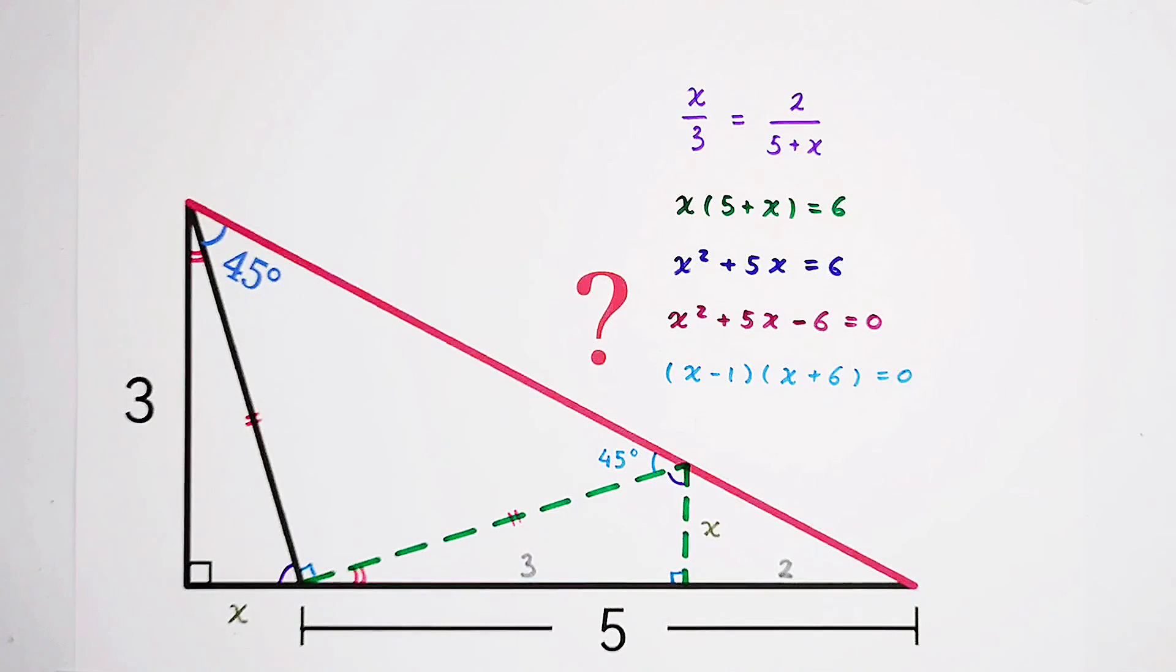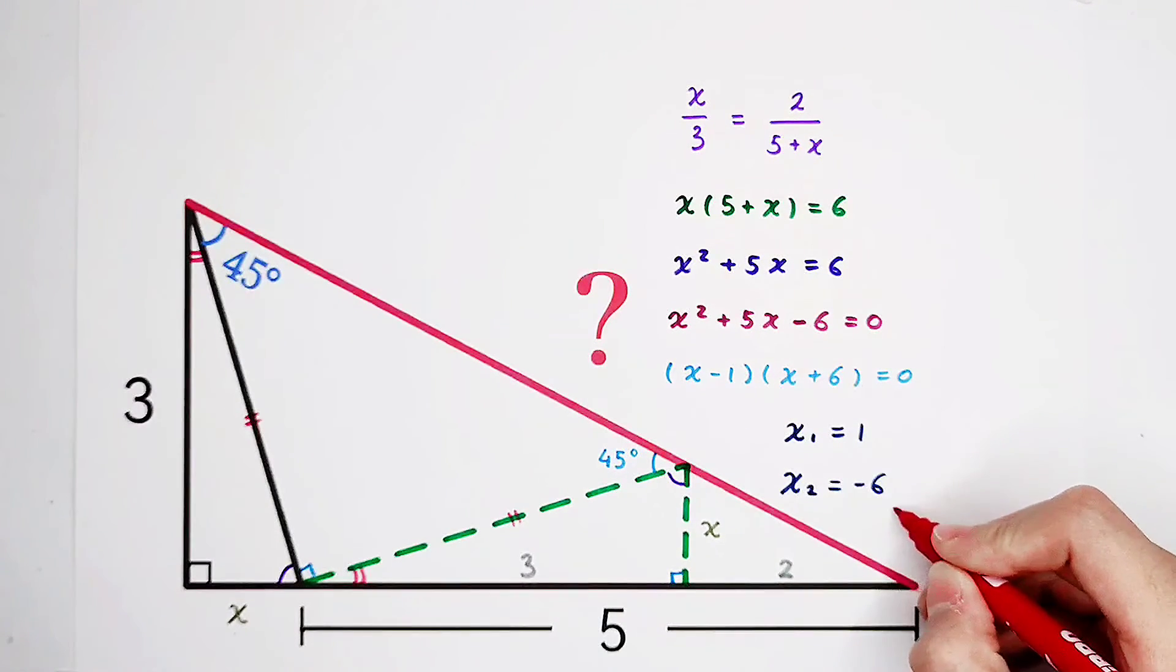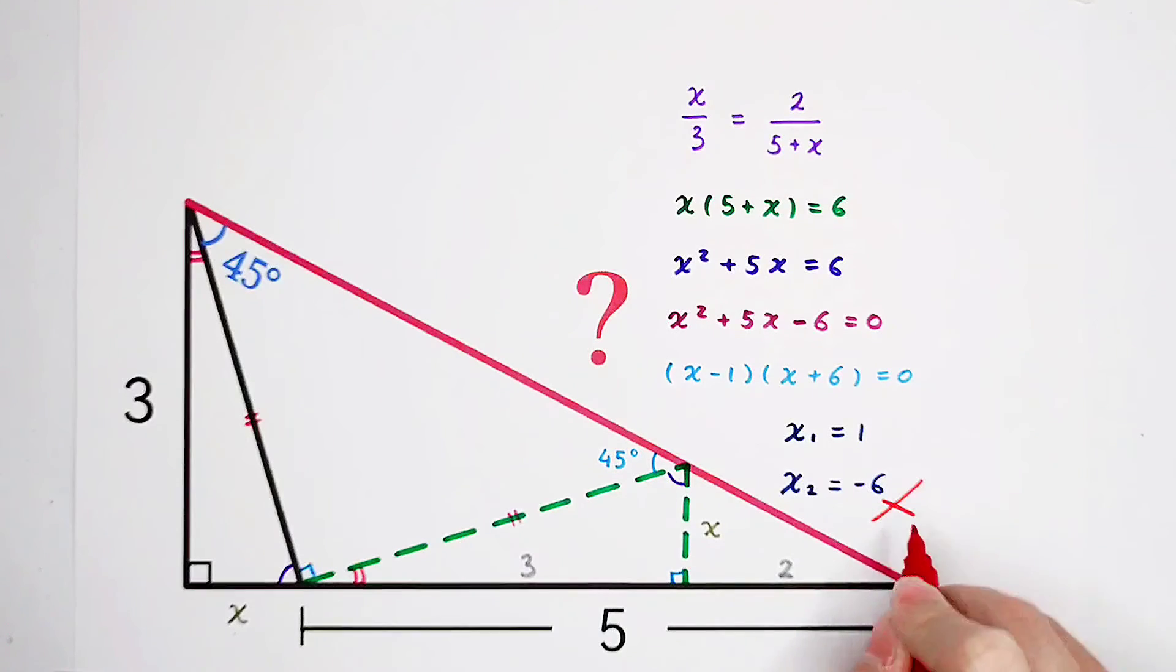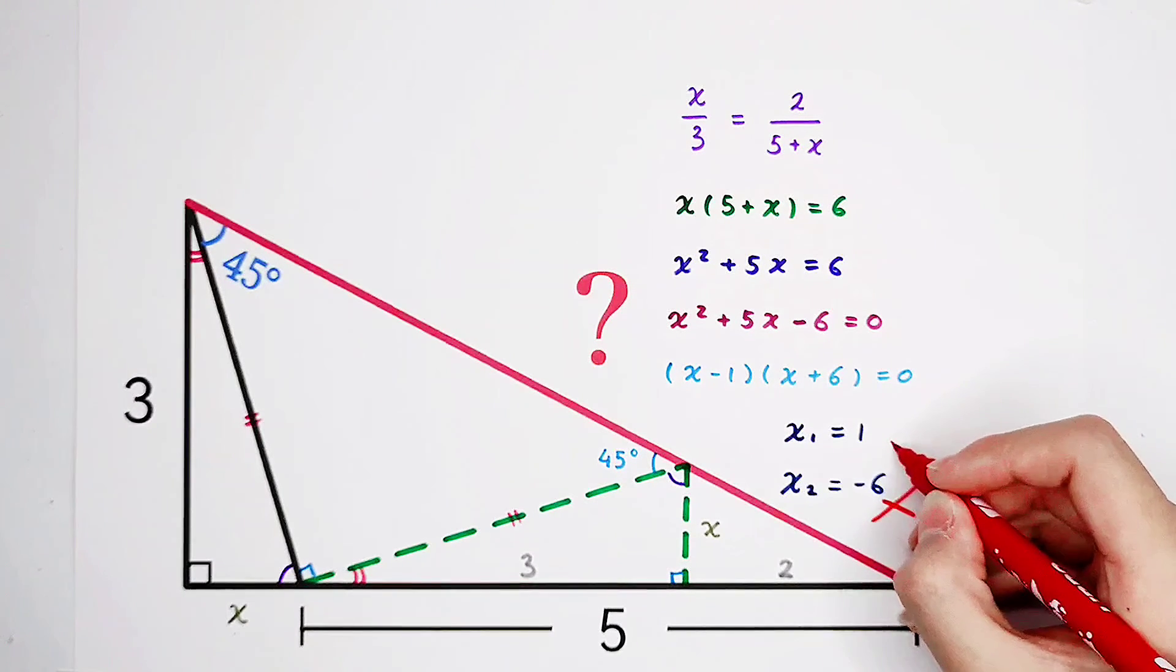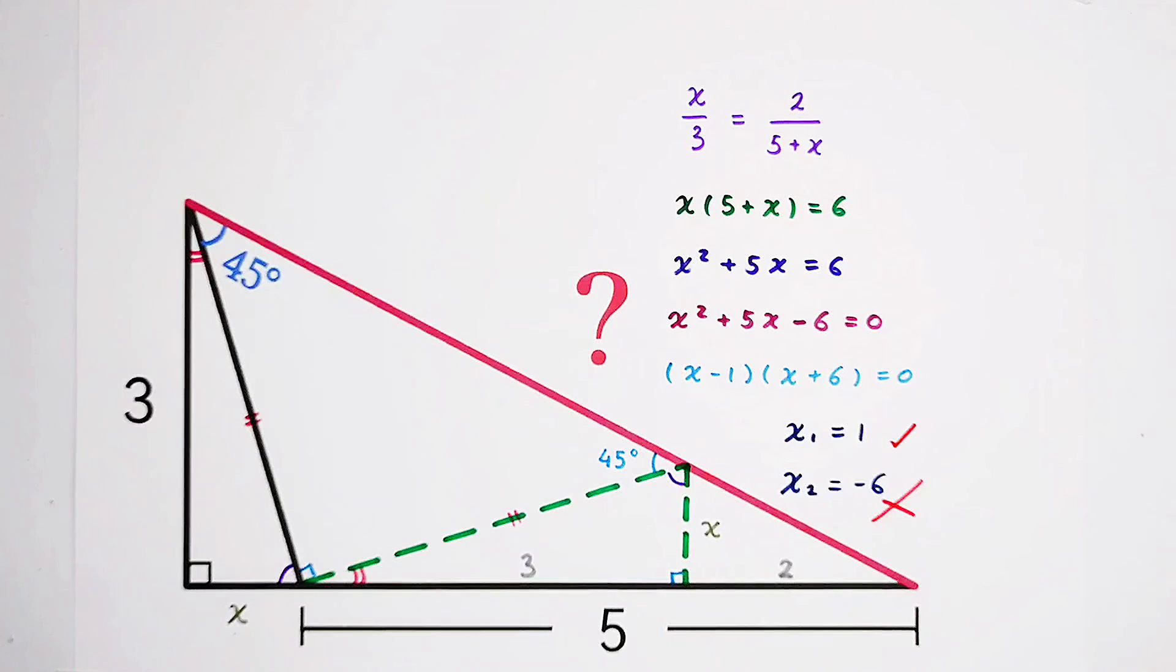So now we get two values for x. x1 is 1, x2 is negative 6. However, a length can never be negative. So x2 equals negative 6, no way. 1 is the correct answer. So x is 1. This piece measures 1. Okay. That means the long right angle side is 5 plus 1 is 6. And the short right angle side is 3.